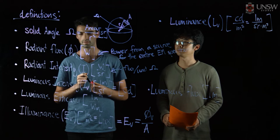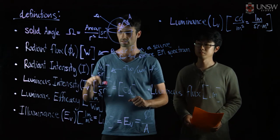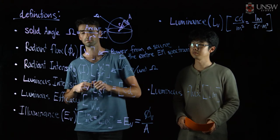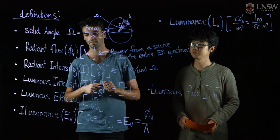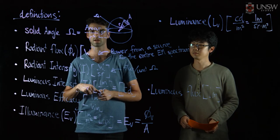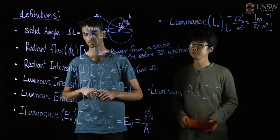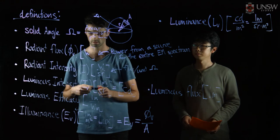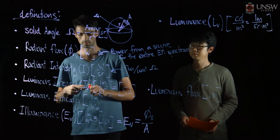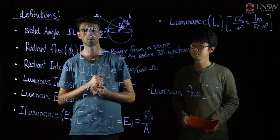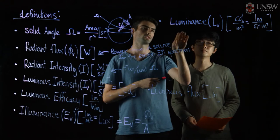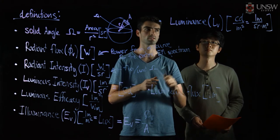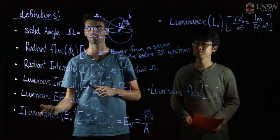And then we have luminous flux, and luminous intensity, which is also per unit solid angle. We have luminous efficacy of our lighting, which is the luminous flux divided by the power required for that lighting. And then we have illuminance — the lux we will see on our surface. And we have luminance as well, which is what is radiating from our surface — what you'll be perceiving from the surface, as opposed to what is perceived by the surface.